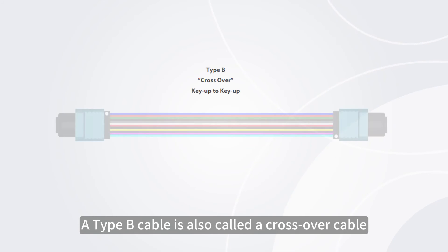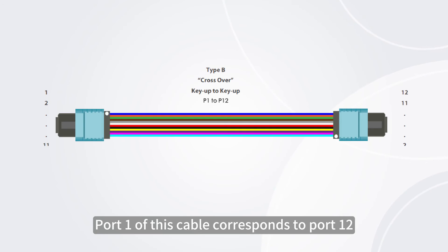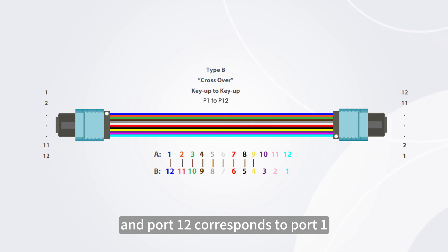A type B cable is also called a crossover cable. Port 1 of this cable corresponds to port 12, and port 12 corresponds to port 1.